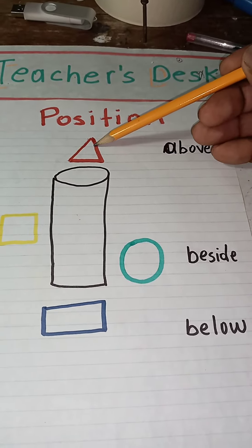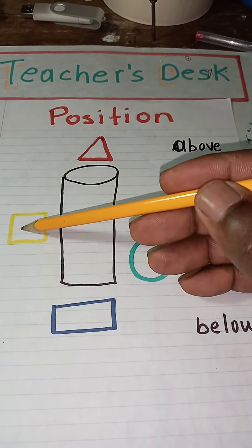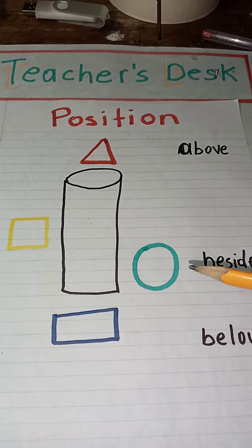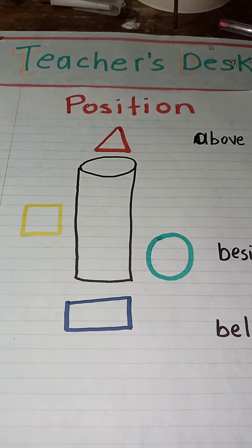If I say put it below, the child knows where to put things. You can use physical examples in the house to test their knowledge of positions.